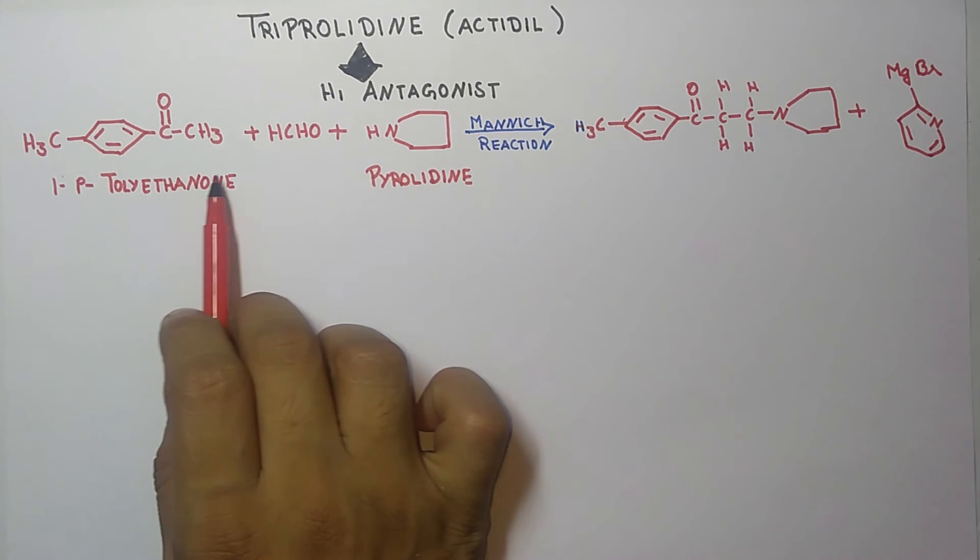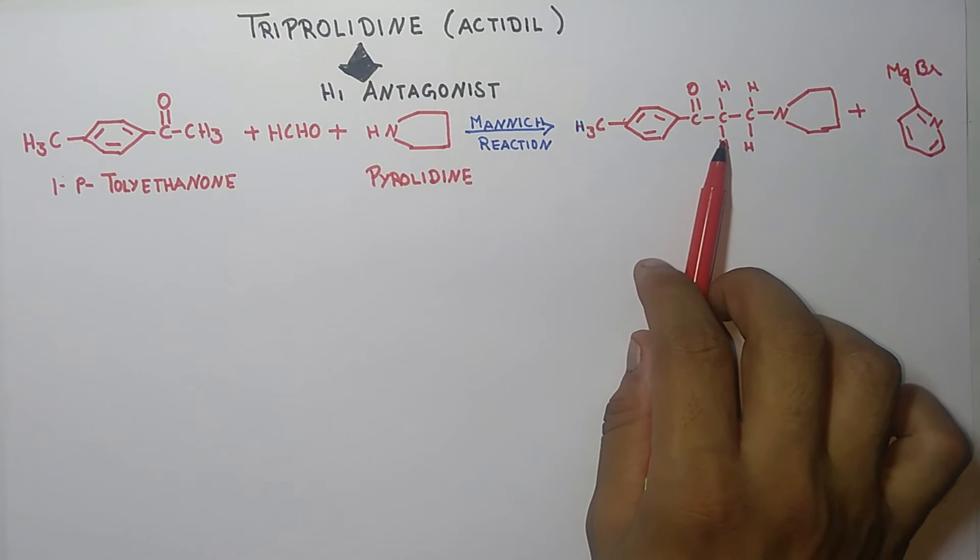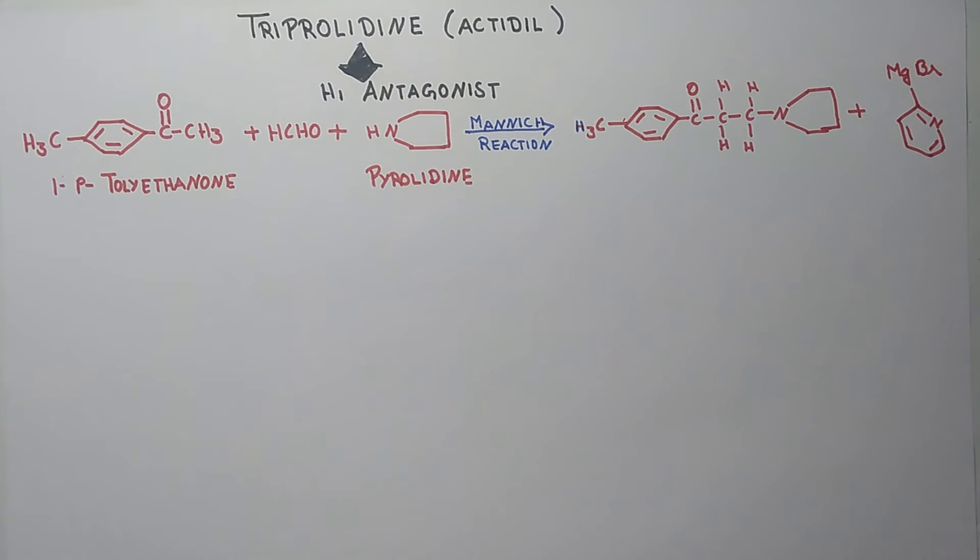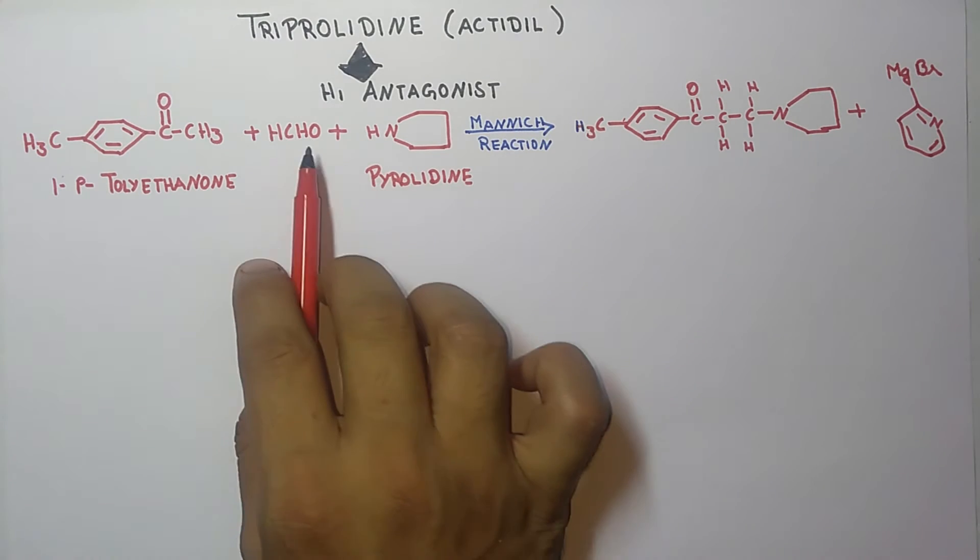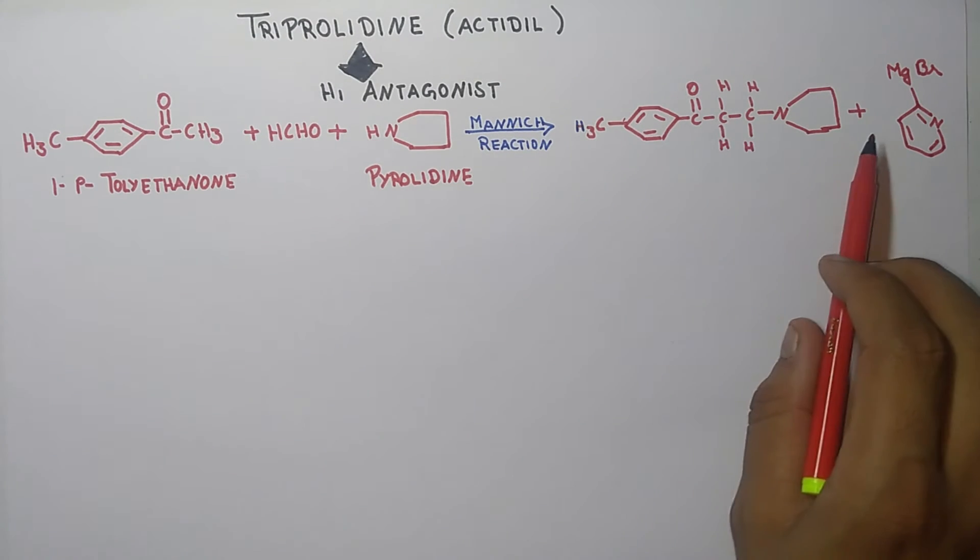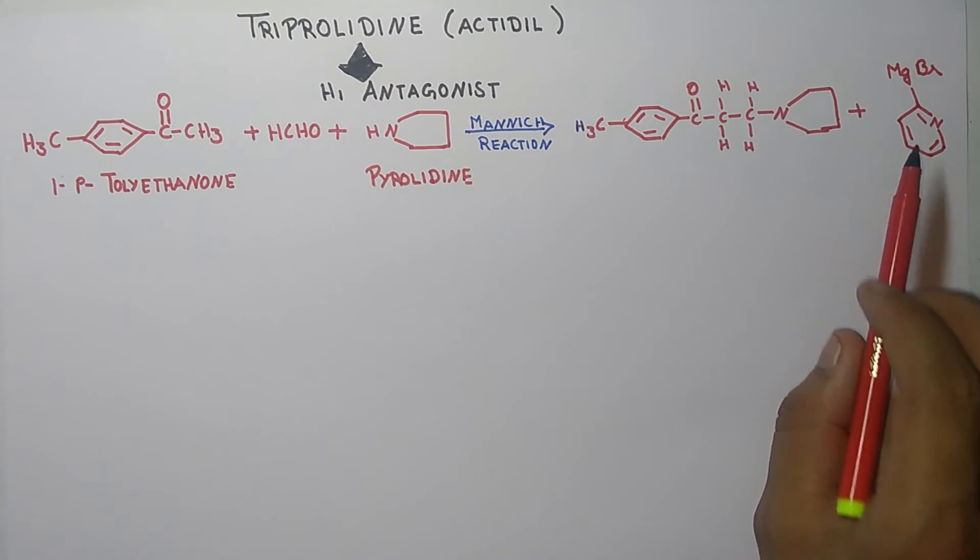By adding these structures we get this structure. So by adding 1-para-tolyl-ethanone and pyrrolidine with aldehyde, we get this structure plus this structure. Now moving on to the next step.